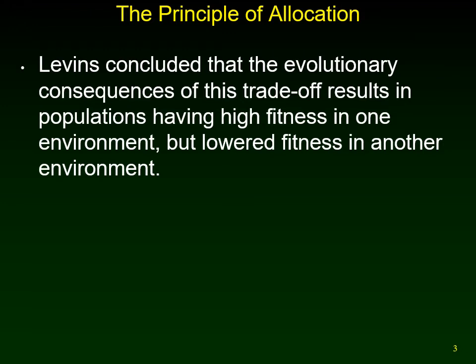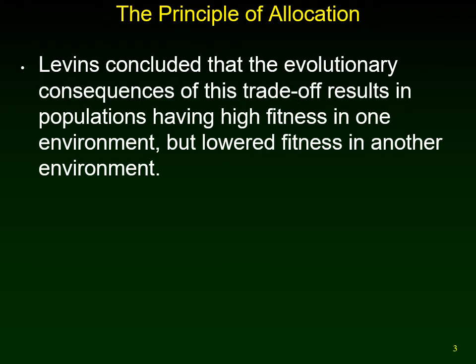Researcher Richard Levins used a mathematical model to examine the evolutionary consequences of trade-offs, publishing it in a book called Evolution in a Changing Environment. He concluded that these trade-offs result in populations having high evolutionary fitness in one environment but lowered fitness in another environment.